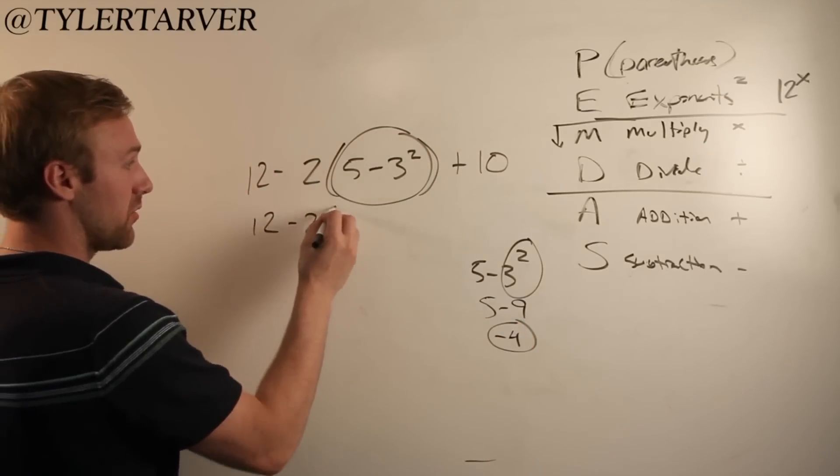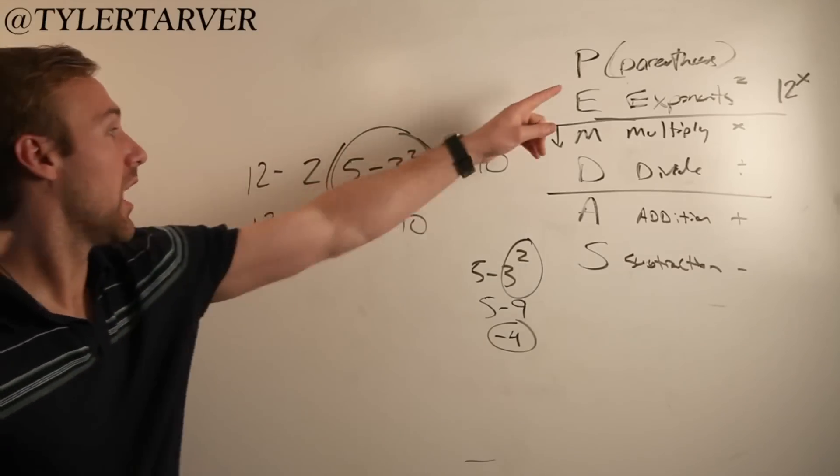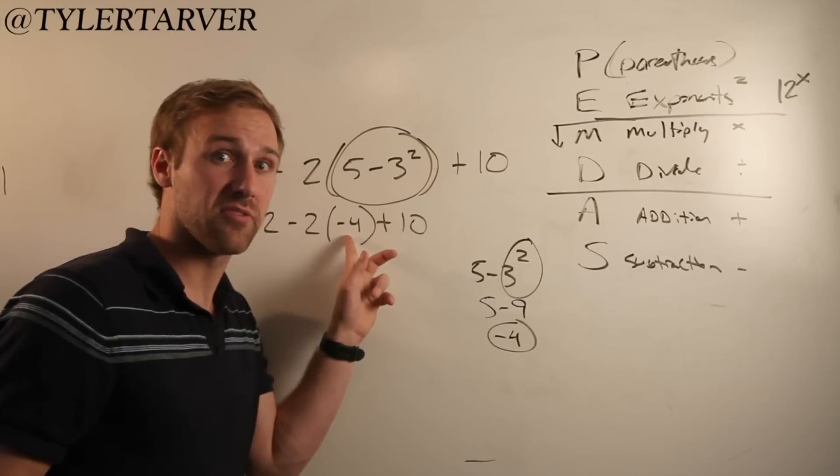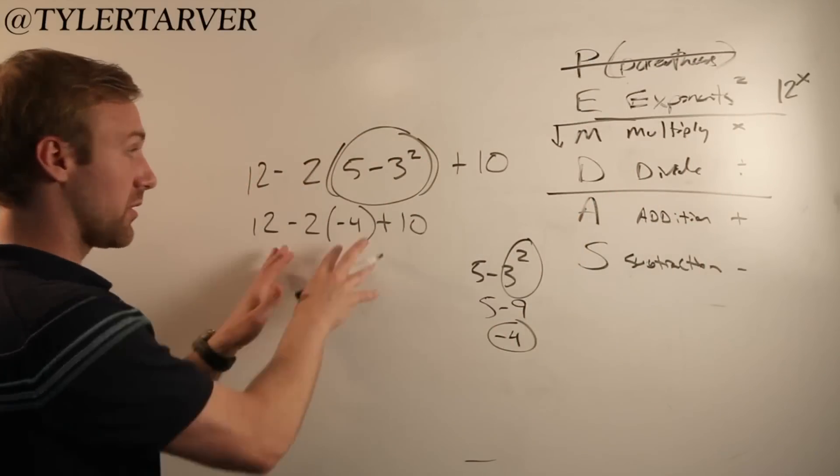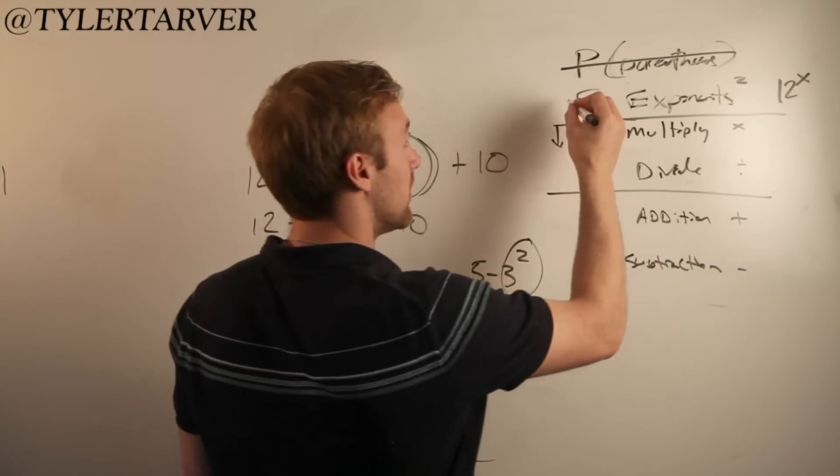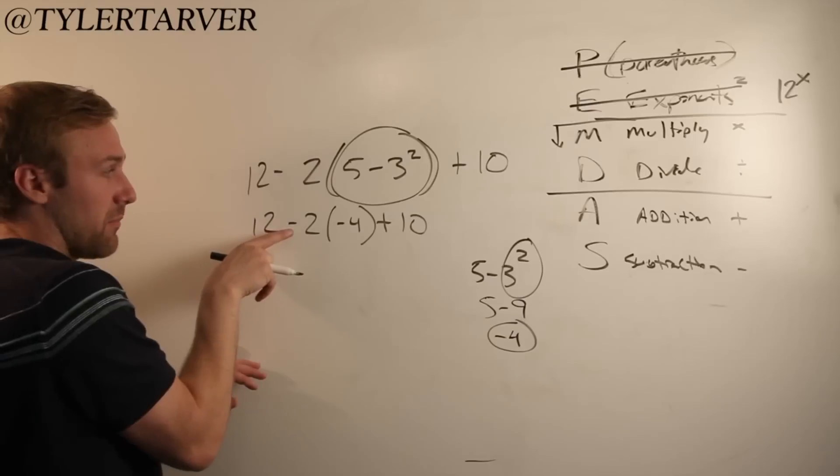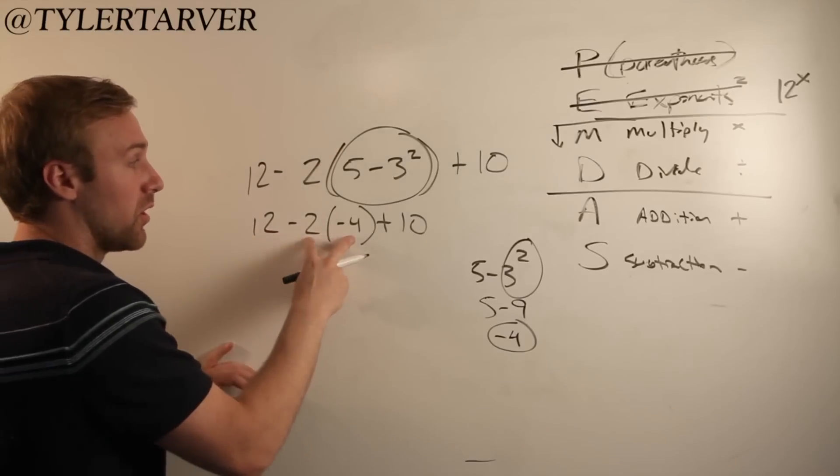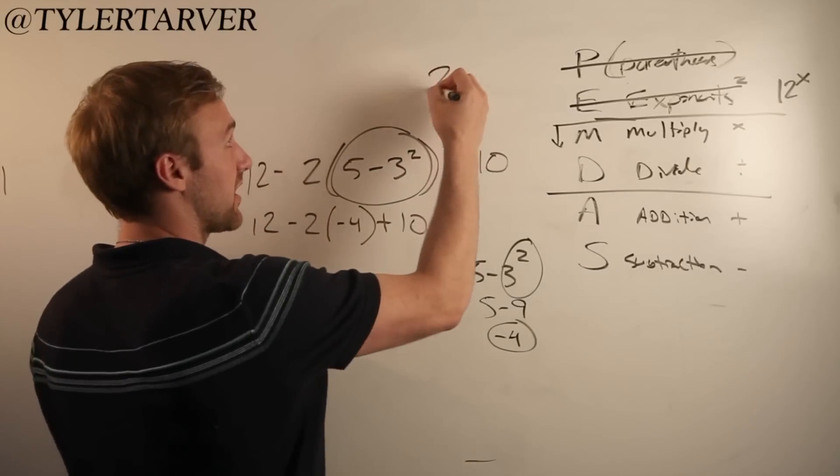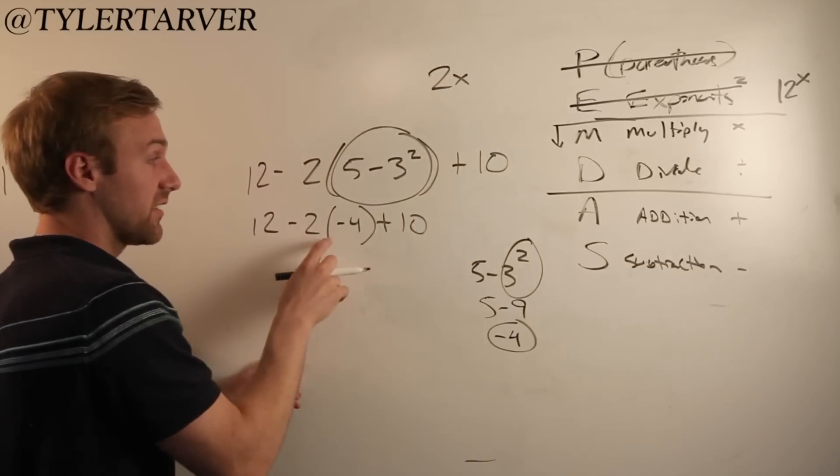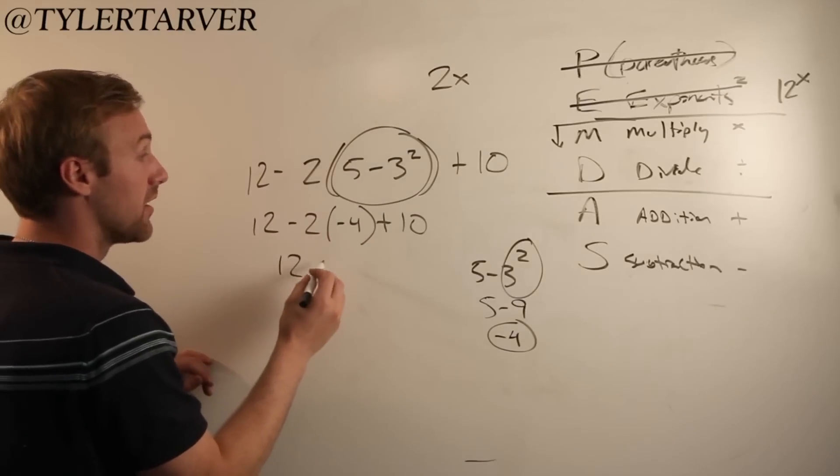So 12 minus 2 times negative 4 plus 10. I have parentheses here but there's nothing to simplify in there, so therefore it's no longer needed. Exponents? Do you have any exponents left? No. Multiply? This means multiply. Anytime you have a parentheses right next to something else, it's essentially the same as multiply. Just like 2x would be 2 times x. This is negative 2 times negative 4. So negative 2 times negative 4 makes a positive 8.